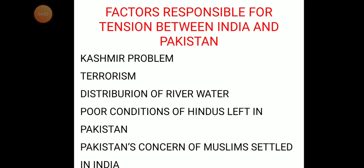There is also the problem of distribution of river water — specifically the Sindhu, Jhelum, and Ravi rivers. This dispute was addressed by a treaty signed in 1960, yet it failed to fully resolve the issue and it continues to be a source of tension.